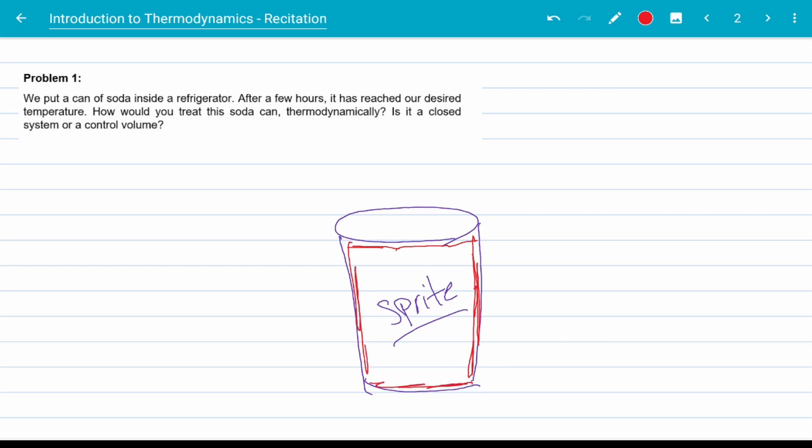Here is a can of soda. The red lines show the boundaries of this system. It's in the fridge, so heat is crossing the boundaries and going out of the can and into the fridge space, which is our surroundings. However, no mass is crossing any of the boundaries.